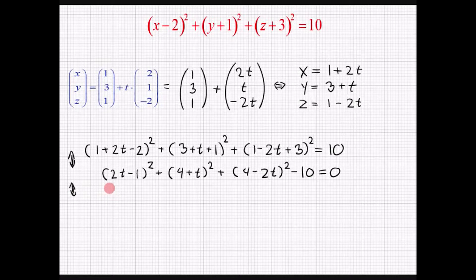Vi siger 2t i anden, det er altså lige med 4t i anden. Minus 1 i anden, det er plus 1. Og 2 gange 2 gange t gange med minus 1, det er minus 4t. Så siger vi plus 16. Plus 4t i anden. Og plus det dobbelte produkt.